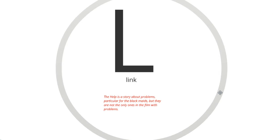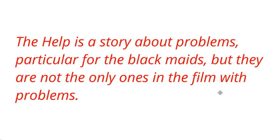Last is the link. Now, the link should actually be a double L, but I'm sure you're intelligent enough to remember that — so it's sort of TEAL plus. There is the link back to the overall essay point, and also the link forward to the point you're going to make in the next paragraph. So let's have a look: 'The Help is a story about problems, particularly for the black maids.' That's going back to the prompt and confirming, yes, The Help is a story about problems. 'But they are not the only ones in the film with problems.' So I am getting the reader ready for the fact that I'm going to come back in the next paragraph and talk about the problems of the white women.